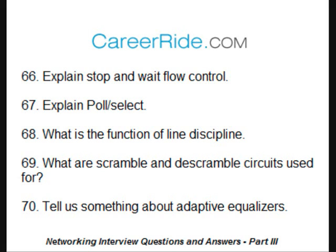Explain poll. Poll is a line discipline used for centrally controlled networks. Here the primary station controls data and the secondary station responds to instructions. The primary polls the secondary to determine if it has data to transmit. If the secondary has data, it responds to the poll with a message and acts as a transmitter. If the primary selects secondary, it identifies secondary as the receiver and checks if it is ready to receive data.